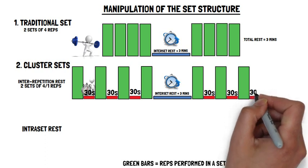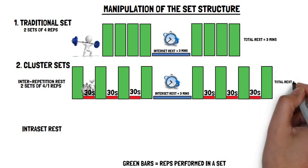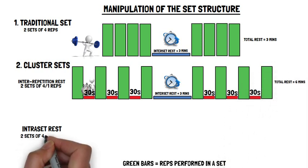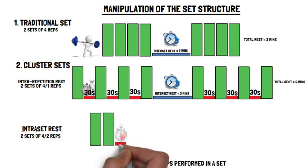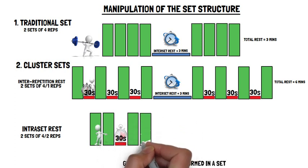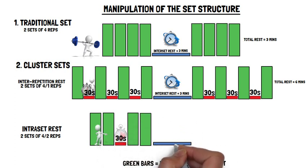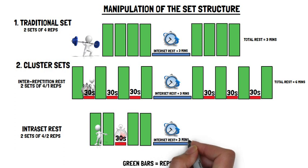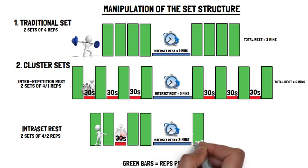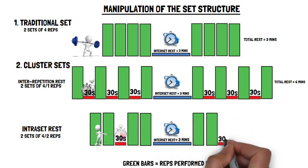Whereas if the two sets of four repetitions were to be performed using an intra-set rest of 30 seconds, it means two repetitions would be performed before 30 seconds rest, before completing the remaining two reps in the set, after which the inter-set rest period would be complete — for example, three minutes — before performing the second set in the same manner.